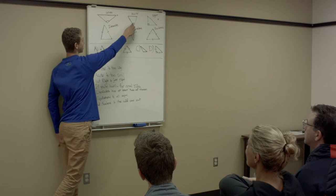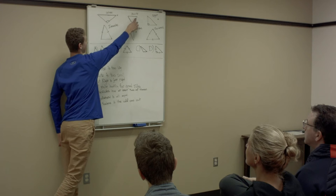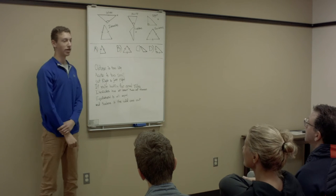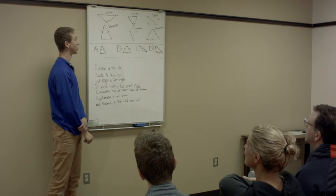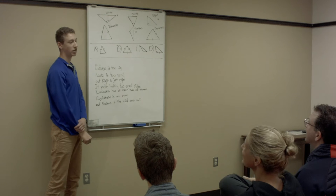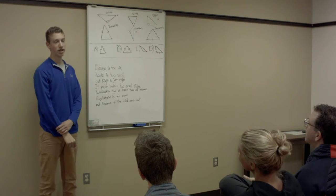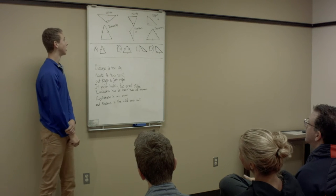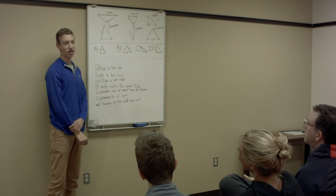Let's go to this triangle. As you can see, all of the angles seem relatively small. This is an acute triangle because each angle is smaller than 90 degrees. A good way to remember that is that it has a Q in its name.